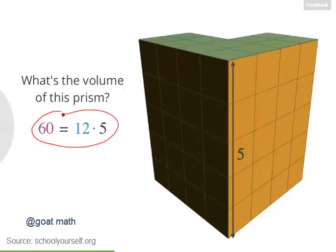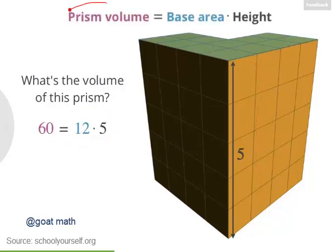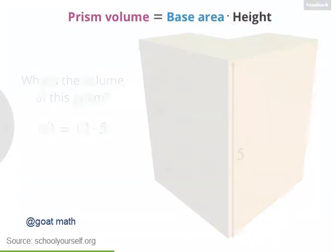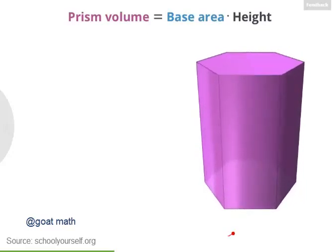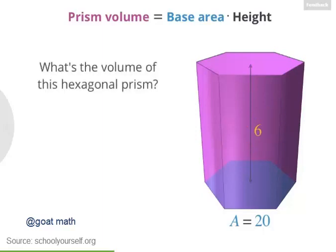This approach works for all prisms. A prism's volume is always equal to the area of its base times its height. For example, here's a hexagonal prism — a prism with a base that's a hexagon. Suppose this hexagon has an area of 20 and the vertical height of this prism is 6. The volume of this hexagonal prism is 120.